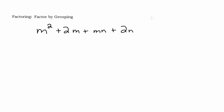So we have these four terms and if you've done anything with factoring, you know the first thing you always want to do is look for the greatest common factor. If I look at these four terms I see some twos but it's not in all the terms. I see a bunch of m's but it's not in the last term, so there is no factor common to all of these terms and I can't take out a greatest common factor.